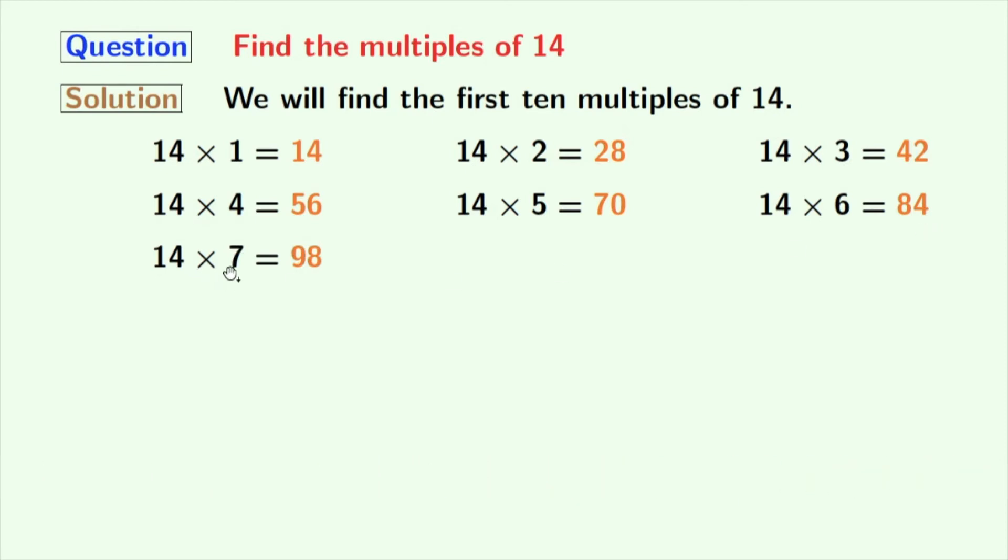Multiplication of 14 and 7 gives us 98. If we multiply 14 and 8, we will get 112.